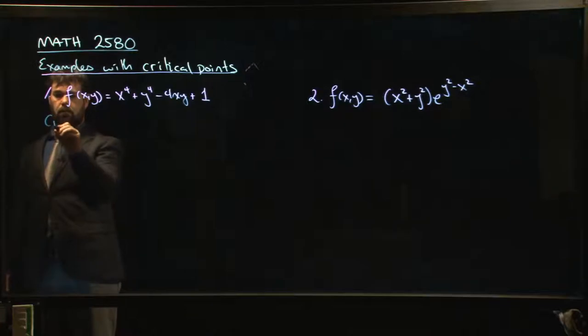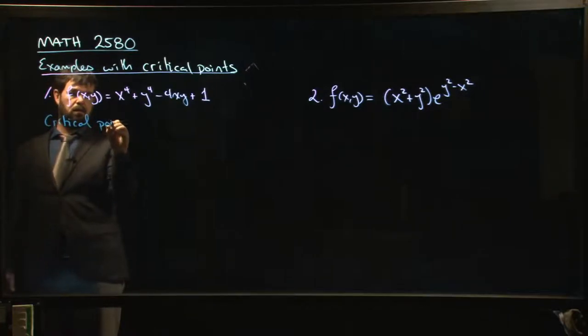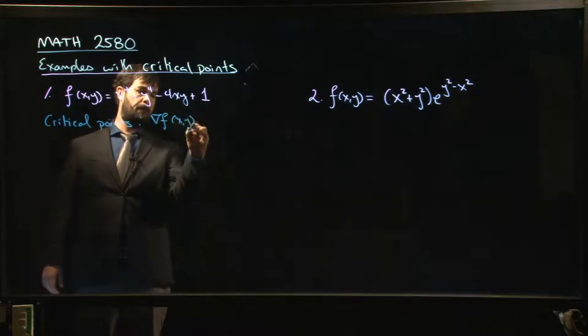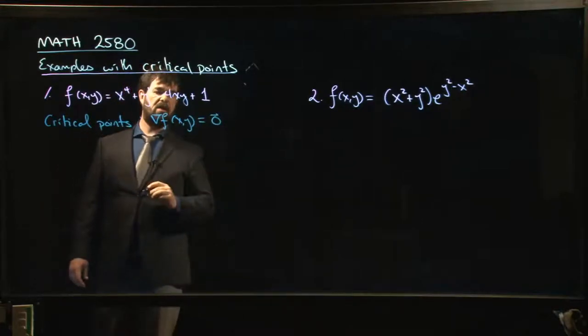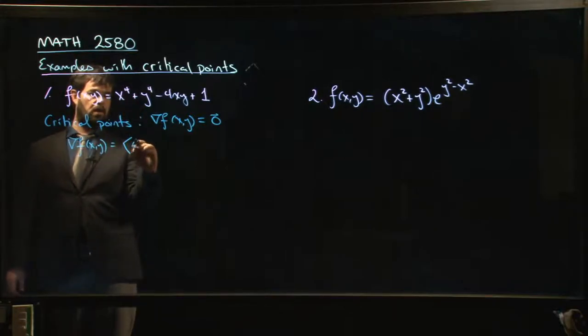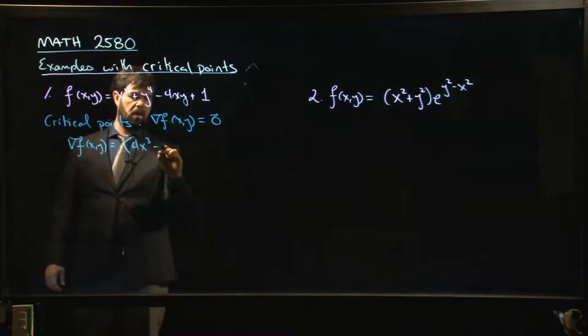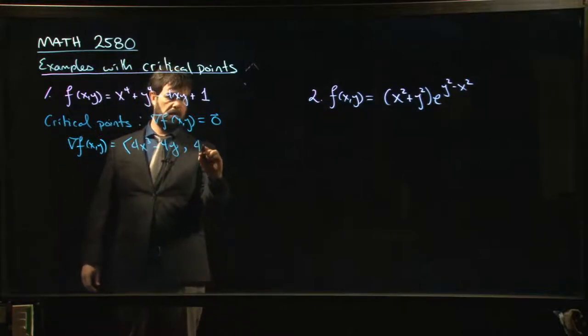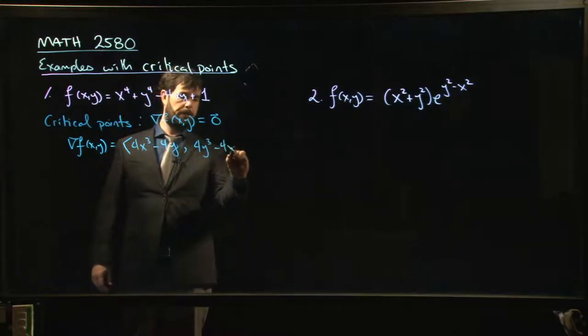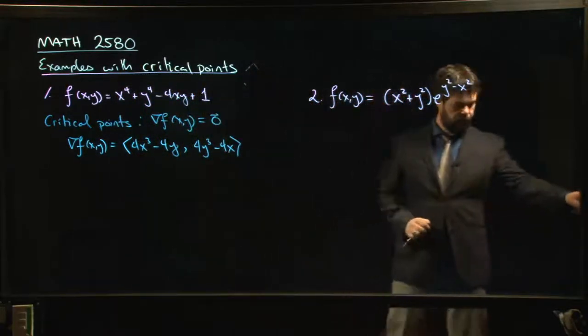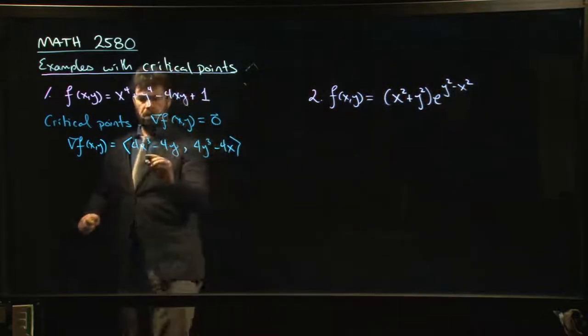First we want to find the critical points, and we know that step one is finding the gradient and setting it equal to zero. So let's start by finding that gradient. We have an x derivative given by 4x³ - 4y, and then we have a y derivative given by 4y³ - 4x. And of course we need both of these to be equal to zero.